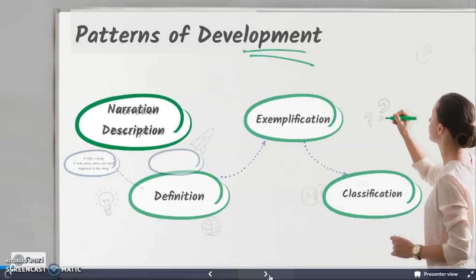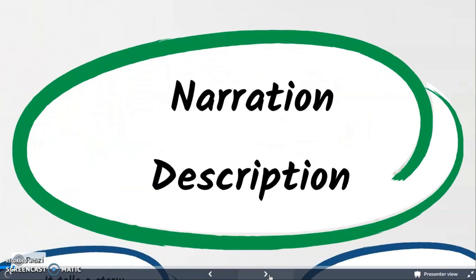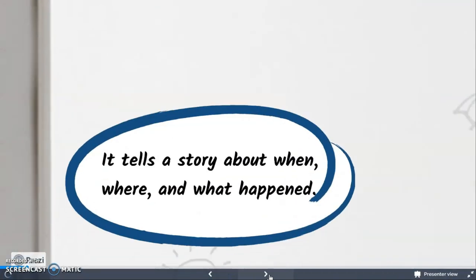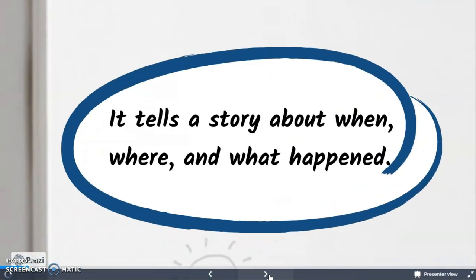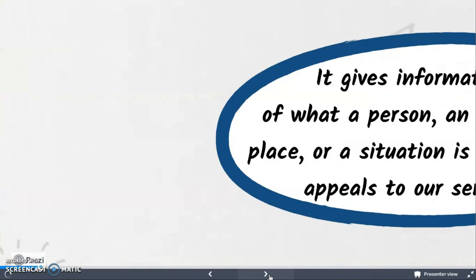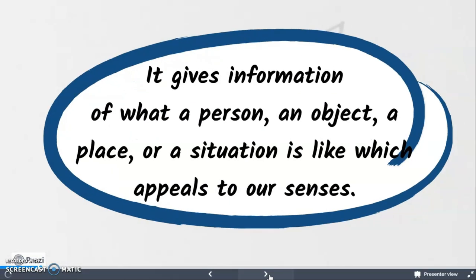Last week, we discussed about narration and description. When we say narration, it tells a story about when, where, and what happened. And when we say description, it gives information of what a person, an object, a place, or a situation is like, which appeals to our senses.